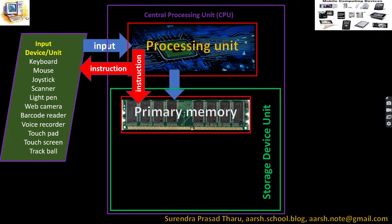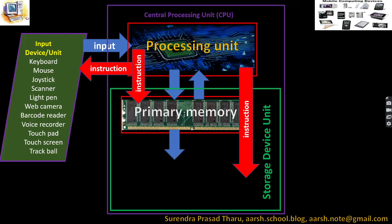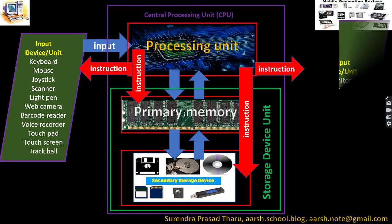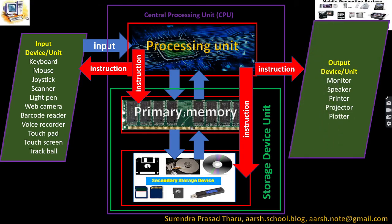Primary memory is active and continuously communicates with the processing unit. When required, it directly communicates with secondary memory as well — both work together. The processing unit also gives instructions to output devices so that they can accept processed data or information and provide the result to the users.